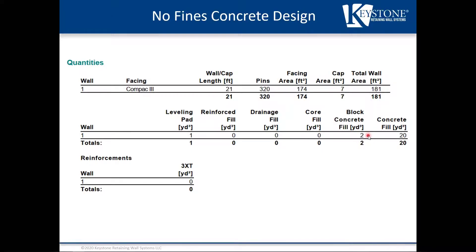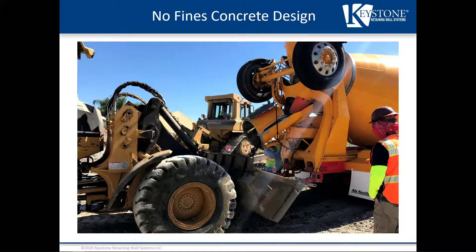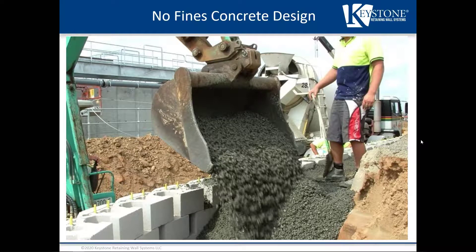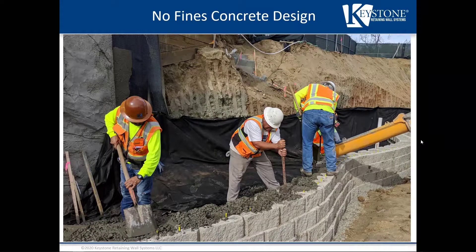Now that design is complete, it's time for installation. The leveling pad, drain pipe, block placement, leveling, and subsequent courses are installed just as with a standard reinforced retaining wall. The key difference lies in the backfill — concrete versus a soil-type backfill. No fines concrete is mixed in a ready-mix truck, brought to the construction site, and placed mechanically using a backhoe, front-end loader, or skid steer. Equipment choice depends on wall height, site restrictions, and equipment reach. Typically, a two-foot section of retaining wall is placed per day, allowing the no fines to harden overnight before placement of the next two-foot lift.